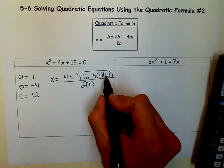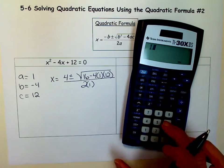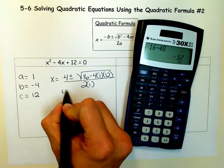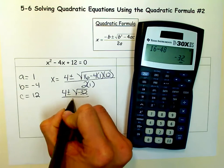Well, 4 times 12 is 48, and 16 minus 48 is negative 32. So I have 4 plus or minus the square root of negative 32, all over 2.